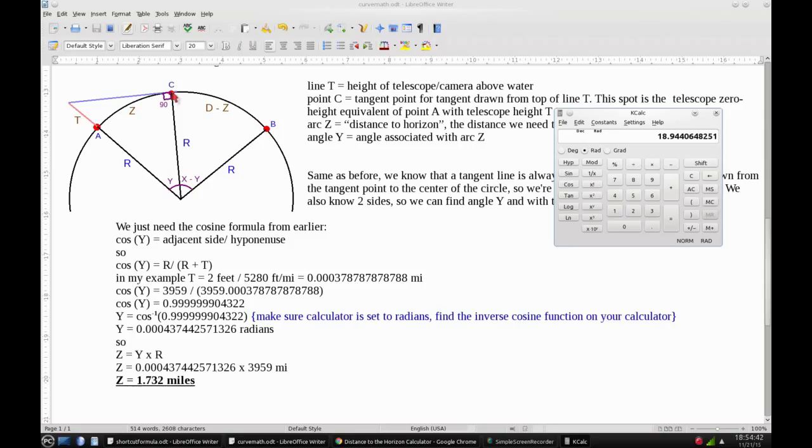So this point C here is a tangent point, and it represents the zero height equivalent of someone standing at point A with the telescope height of T. So all that means is if you had your telescope on the ground and were looking this way, you'd see the exact same thing as someone over here with the telescope height T off the ground.